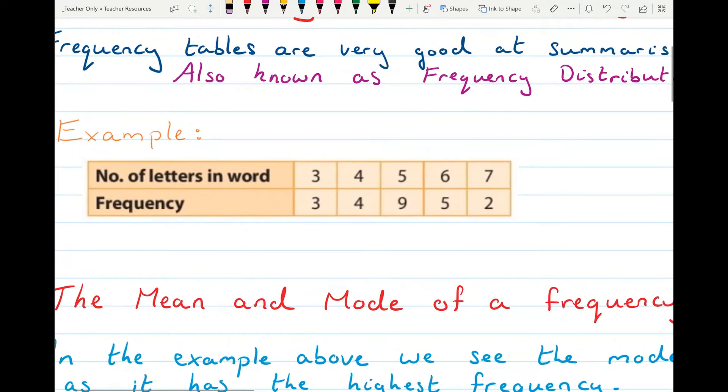Here's an example of a frequency table. In this you have the number of letters in a word, so you could have three letters in the word, four, five, six or seven, and the frequency table tells us how many times that number of letters appeared.